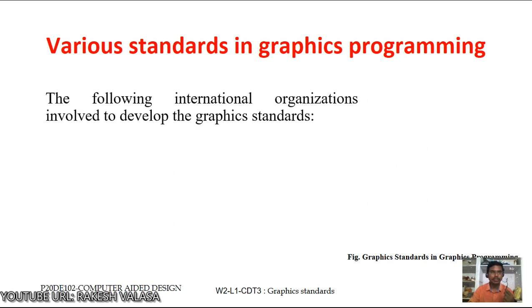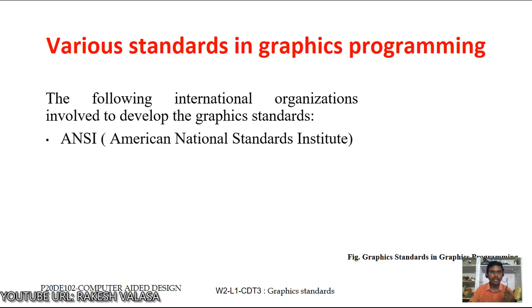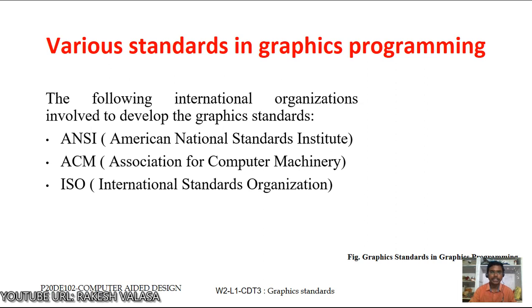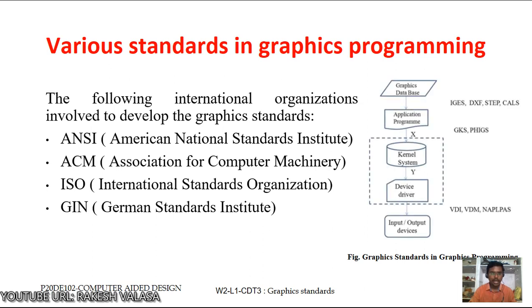The following international organizations are involved in developing graphics standards. First is ANSI — American National Standards Institute. Second is ACM — Association for Computer Machinery. Third is ISO — International Standards Organization. Fourth is GIN — German Standards Institute. As a result of these worldwide efforts, various standards functioning at various levels of the graphics system have been developed. Various graphics standards are: IGES, DXF, STEP, CALS, GKS, PHIGS, VDI, VDM, NAPLPS, and PS.